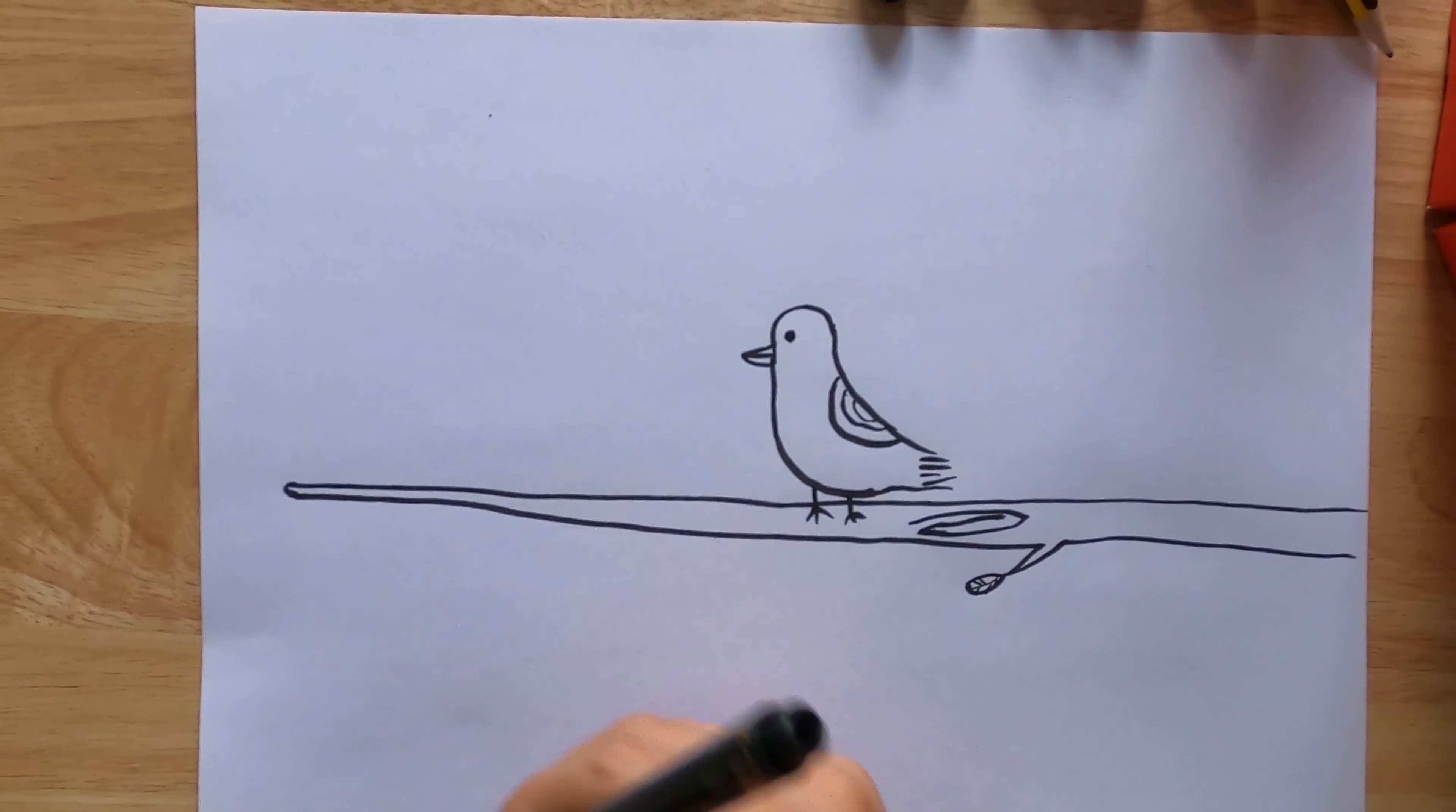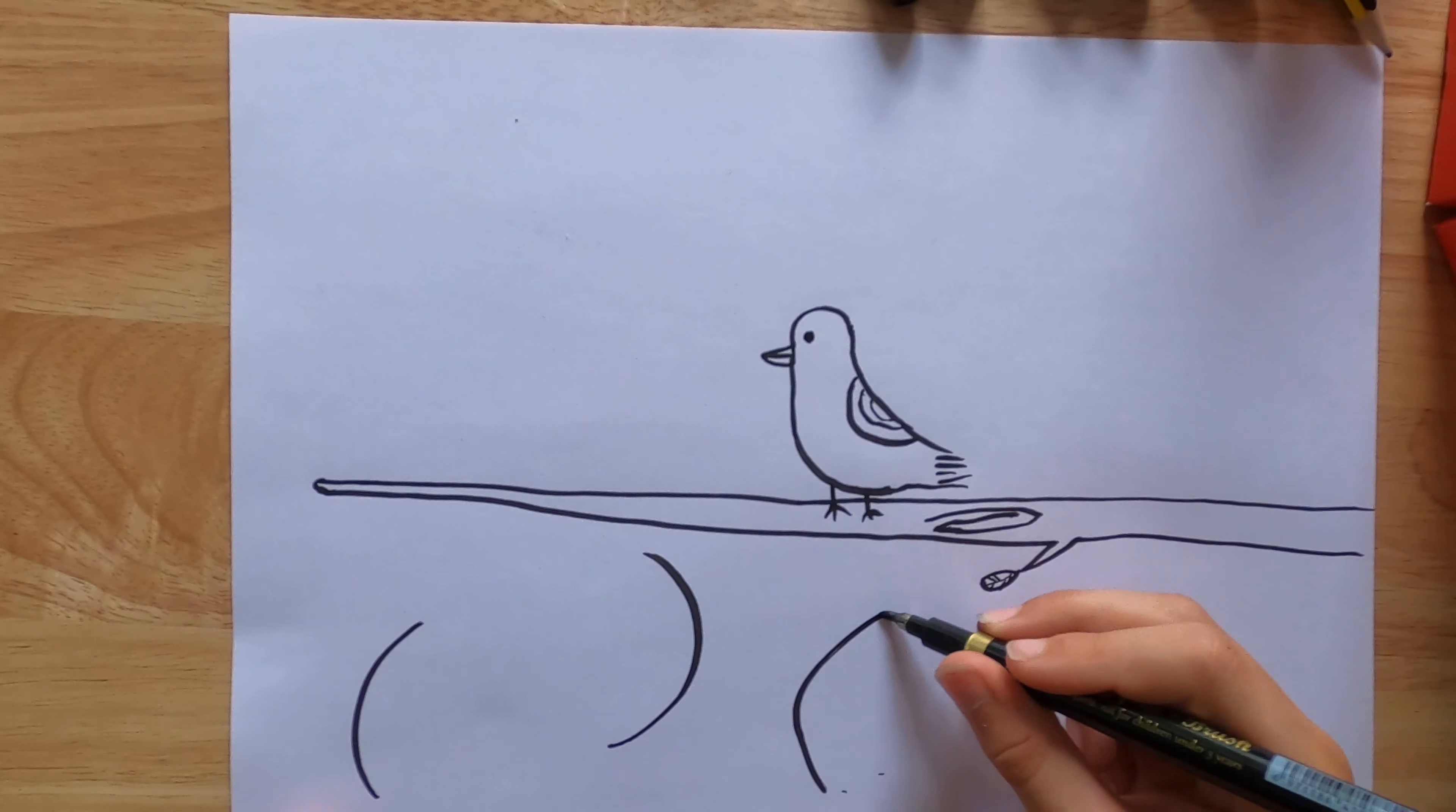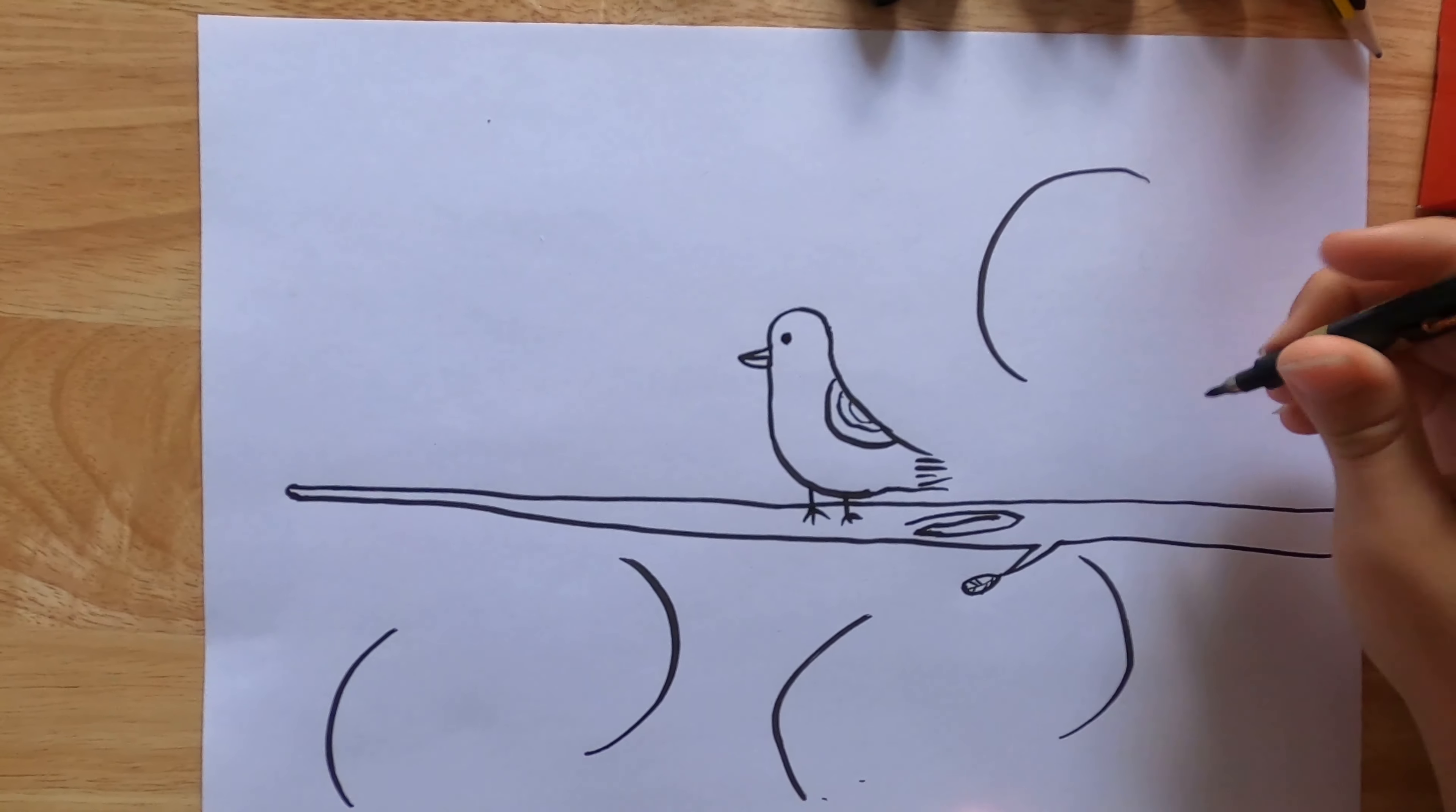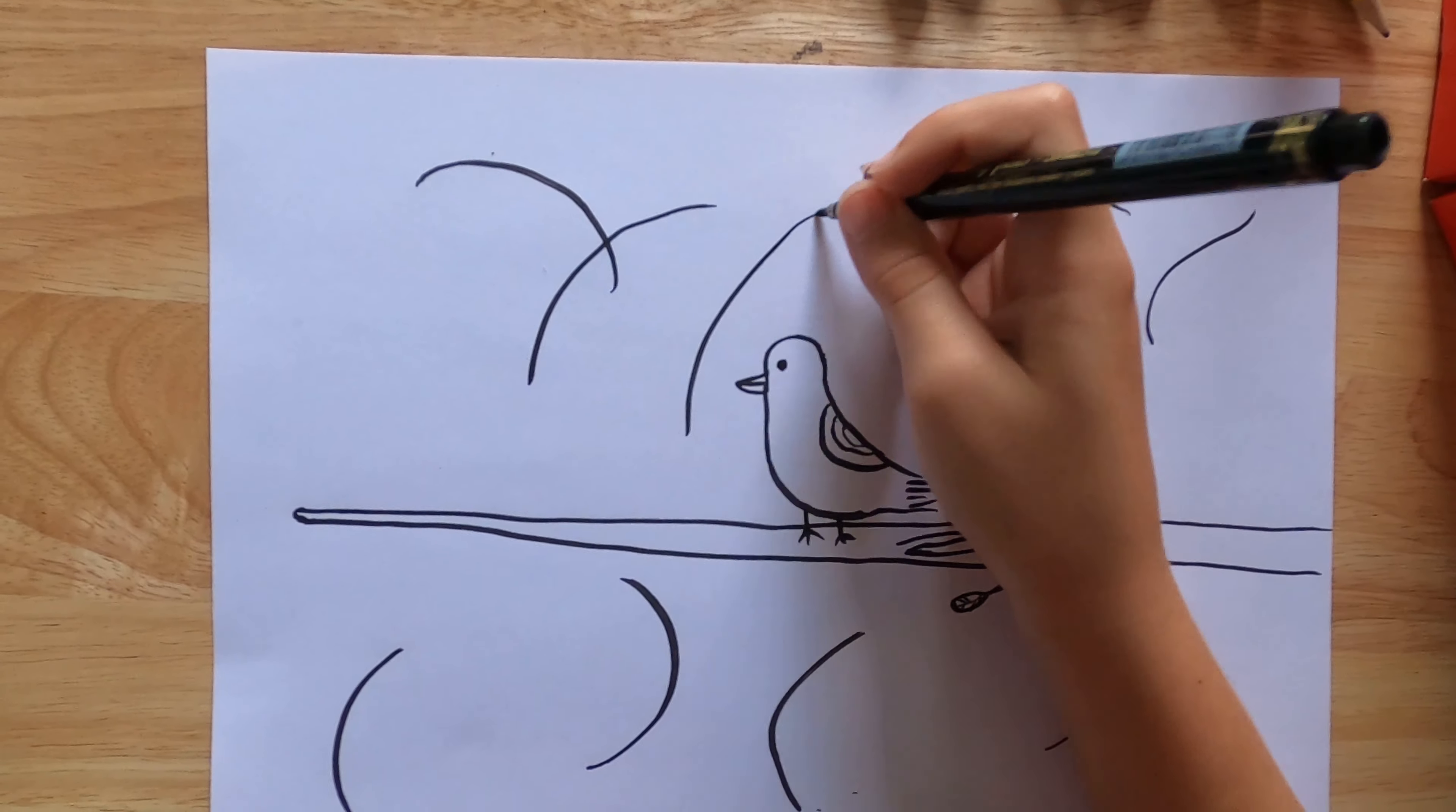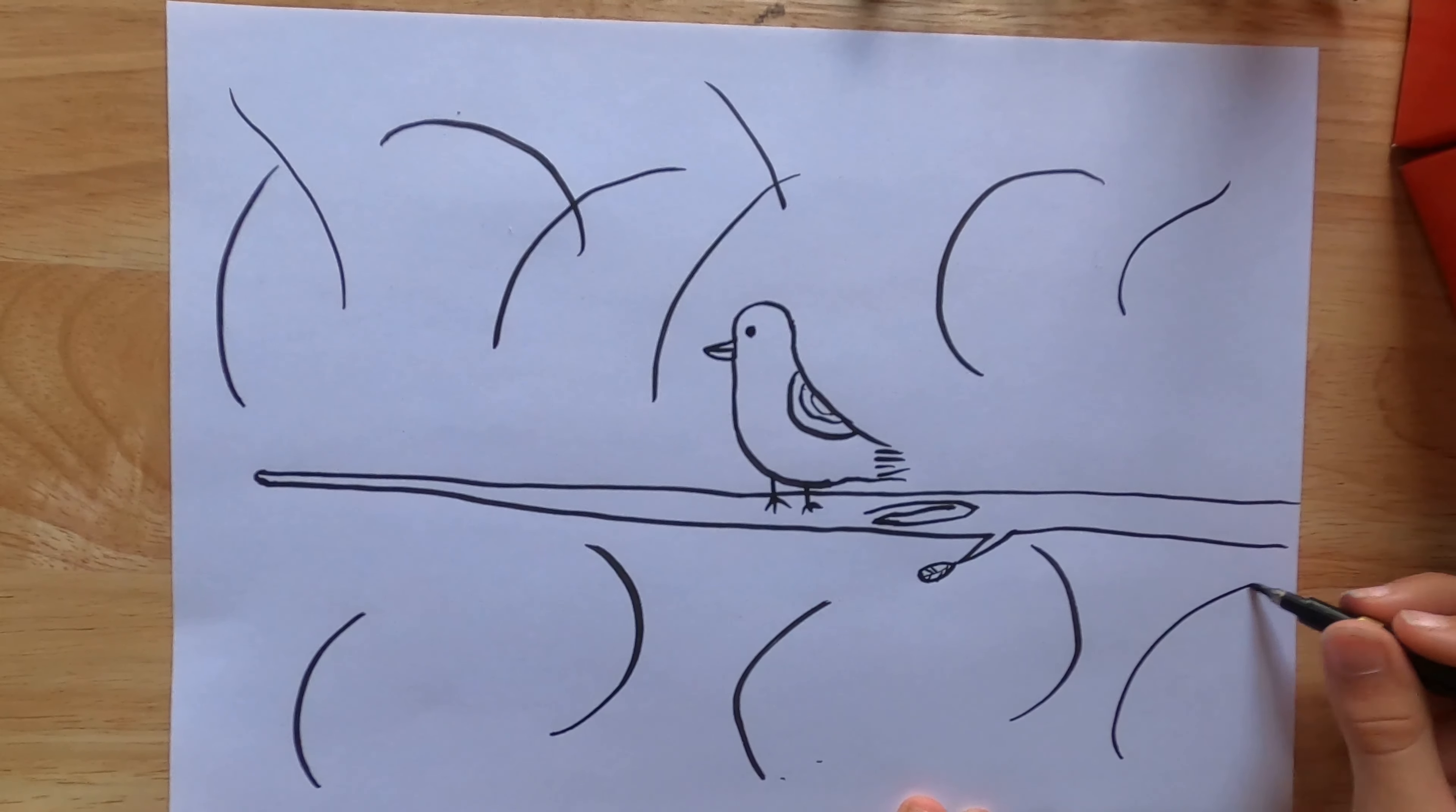Now for the background. We want several of these big strokes around to just give that tree sort of texture. You may want to add a few more if it looks a bit too empty.